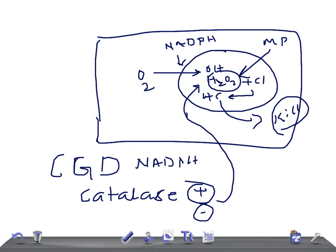However, catalase-positive organisms break down H2O2 themselves, so they do not produce H2O2 for myeloperoxidase to use. With no H2O2, no hypochlorite is synthesized. The oxygen-independent mechanism must then act, but it is very weak. This is why CGD patients get infections very rapidly when infected with catalase-positive organisms.